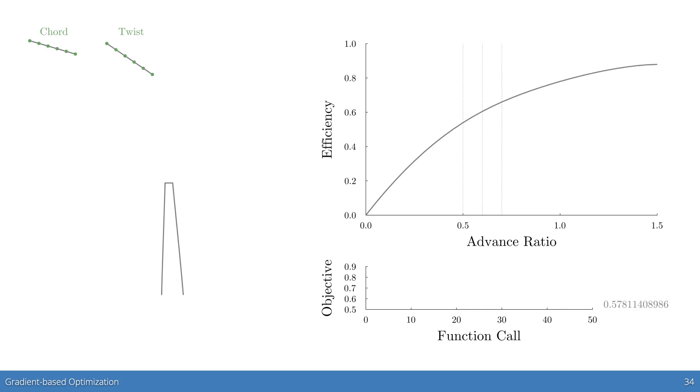On the top right, we'll see a change in the efficiency curve throughout the optimization. Note that the three vertical lines indicate the advanced ratio at which the efficiency is averaged to obtain the objective value. The objective value is plotted and printed out on the bottom right, and will also update throughout the optimization.